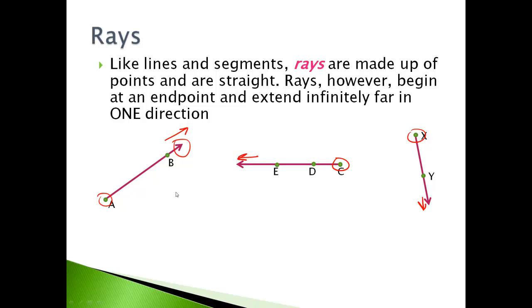So when we label rays, we always have to start with the endpoint. So like for this one, we would say A, B, and then for the symbol on top, what do you think we put? A line had two arrows. The segment was just the line. Ray, from left to right, just a straight line with an arrow at the end. This one over here, we've got ray XY.